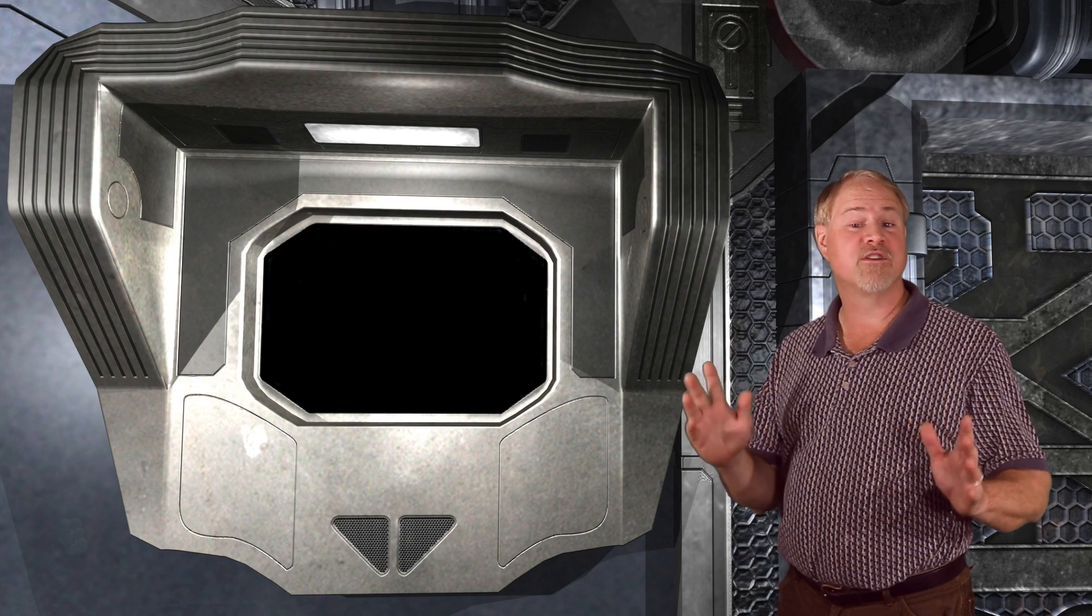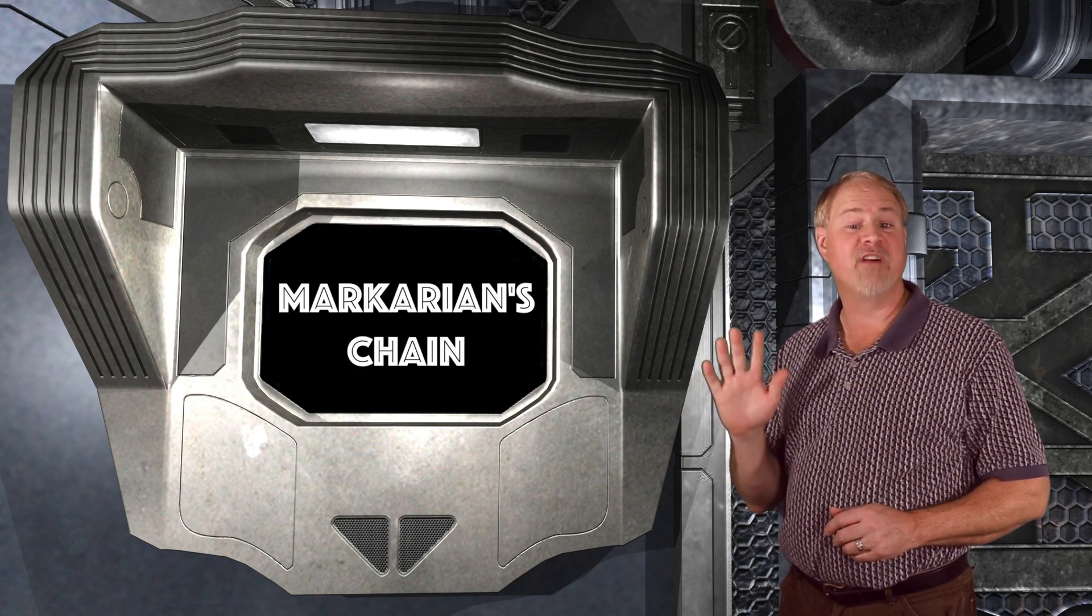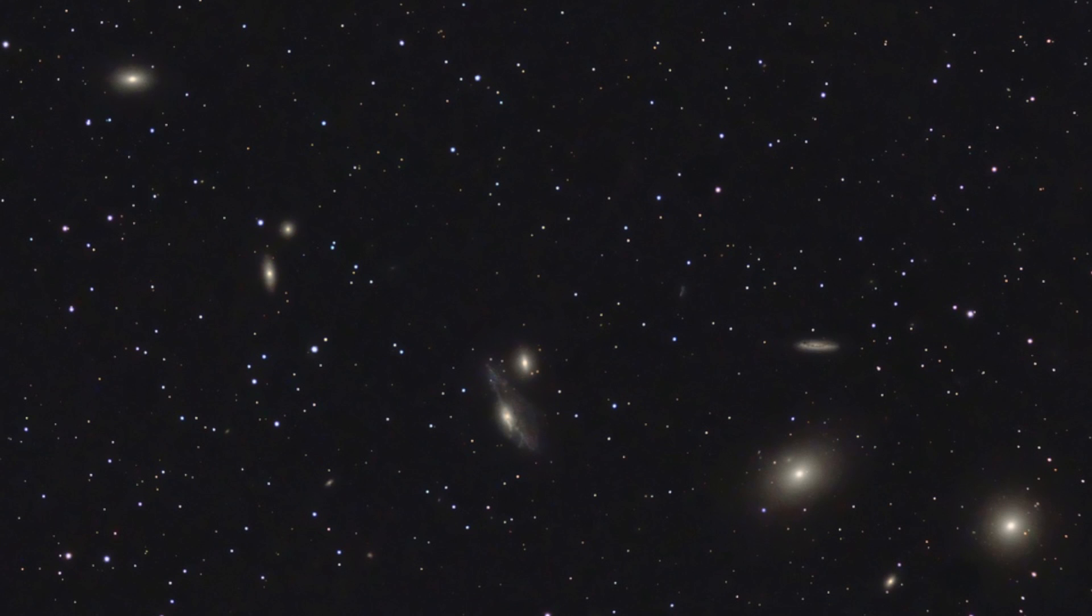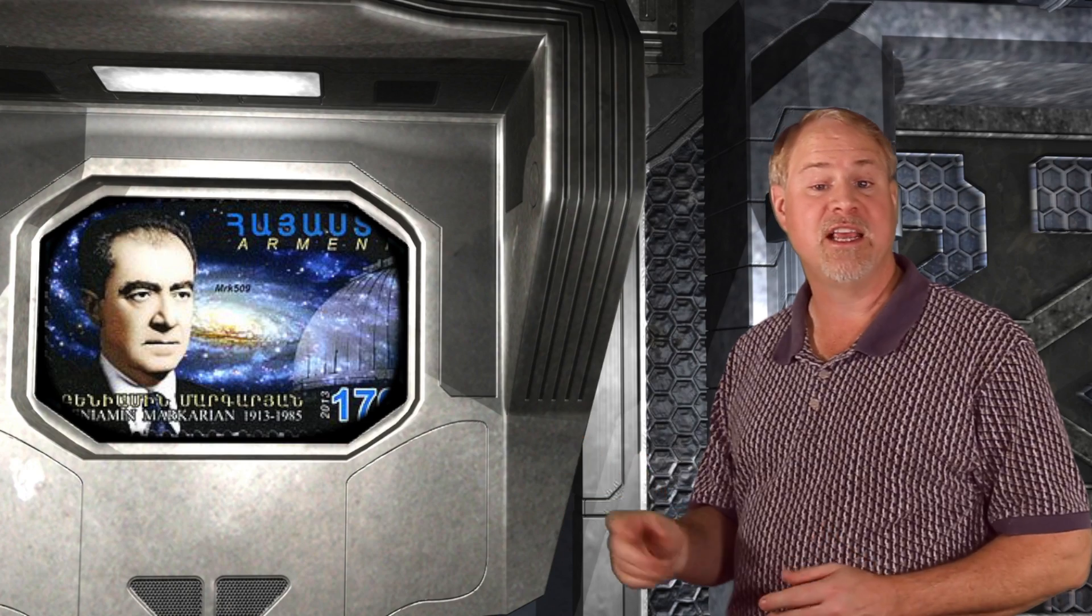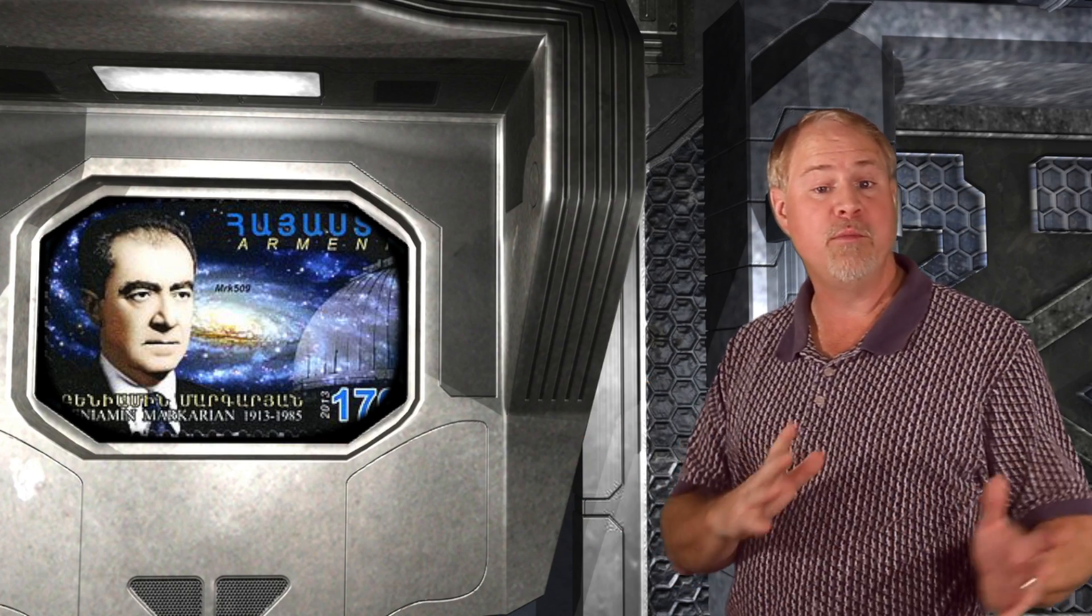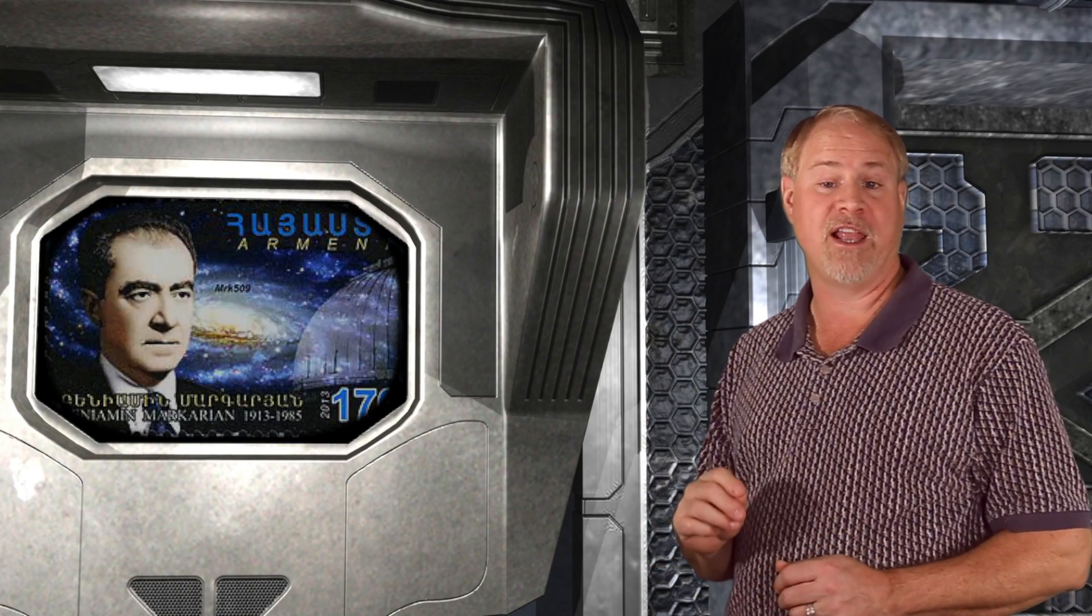This week we'll go on a true galaxy hop, where we'll traverse Markarian's Chain, a group of eleven galaxies that form a long arc in the dead center of the realm. These galaxies were named after the Armenian astronomer Benek Markarian, who discovered in the 1960s that these galaxies all appear to be moving together in space and all give off a similar ultraviolet light signature.